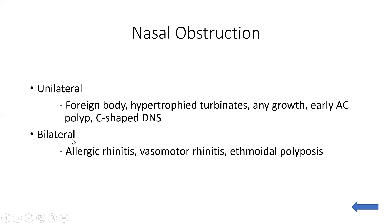Some causes of bilateral nasal obstruction are allergic rhinitis, vasomotor rhinitis, and ethmoidal polyposis. Vasomotor rhinitis is caused by overactivity of the parasympathetic nervous system, which leads to congestion of the nasal mucosa. In nasal obstruction, we should determine whether it is unilateral or bilateral and identify the cause accordingly.